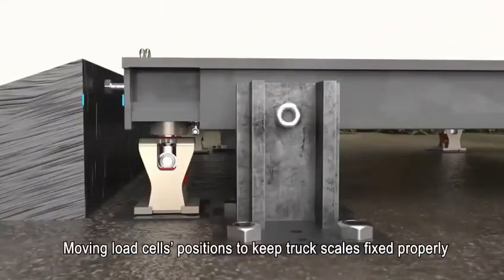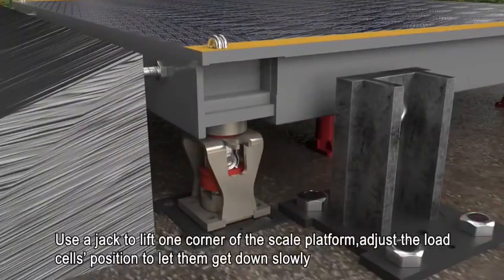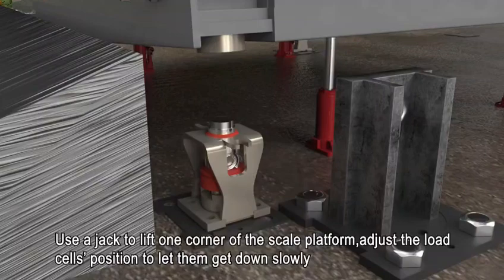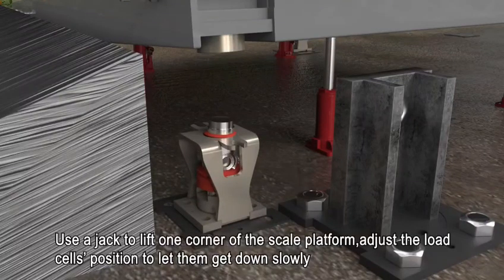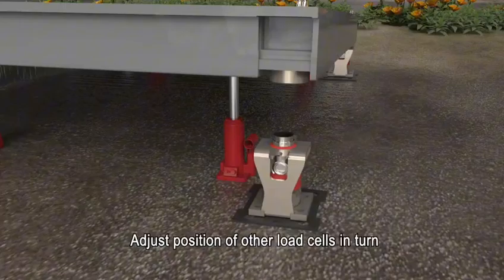Moving load cells positions to keep truck scales fixed properly. Use a jack to lift one corner of the scale platform. Adjust the load cells position to let them get down slowly. Adjust position of other load cells in turn.